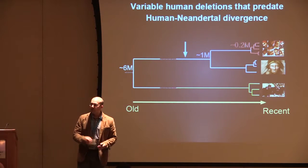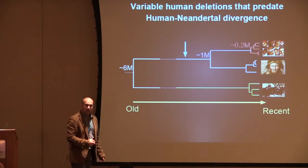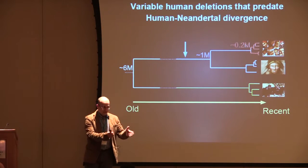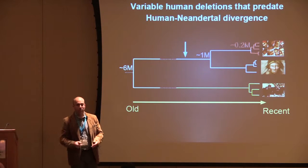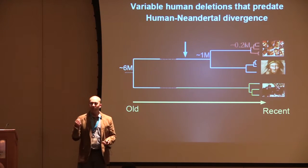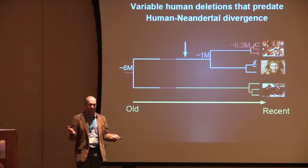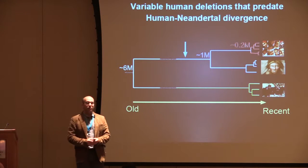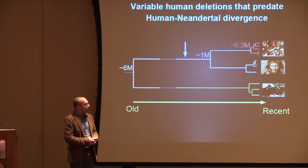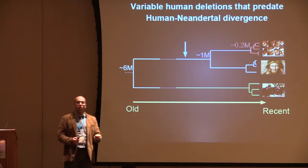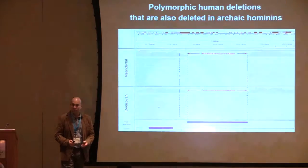To answer this, we wanted to look at the really old ones — deletions that evolved before the human-Neanderthal divergence — so we could say these have been maintained for a long time and there must be an evolutionary reason. Dating using mutation rates is difficult because the rates are uncertain, especially for individual genomic regions. So instead we did a direct comparison of polymorphic human deletions to Neanderthal and Denisovan genomes that are now available.